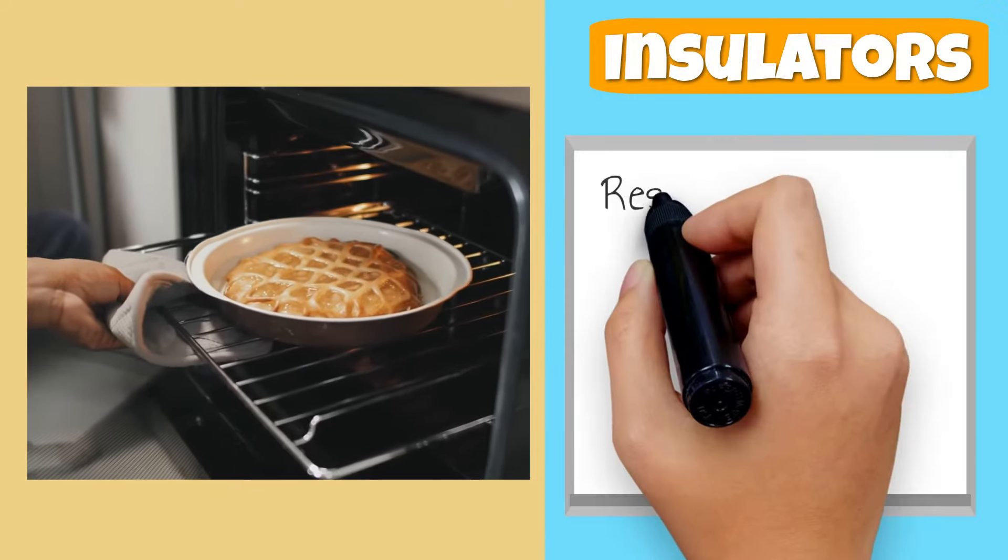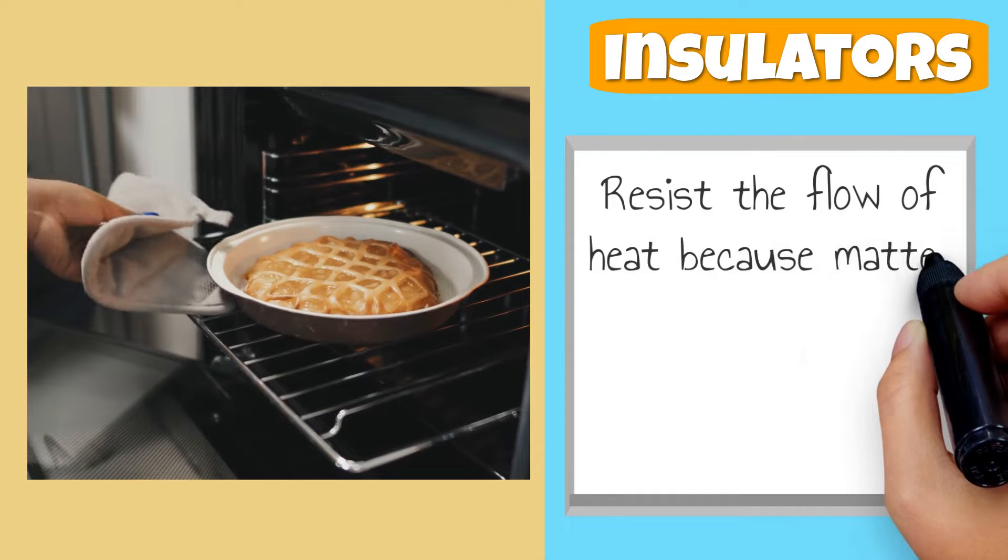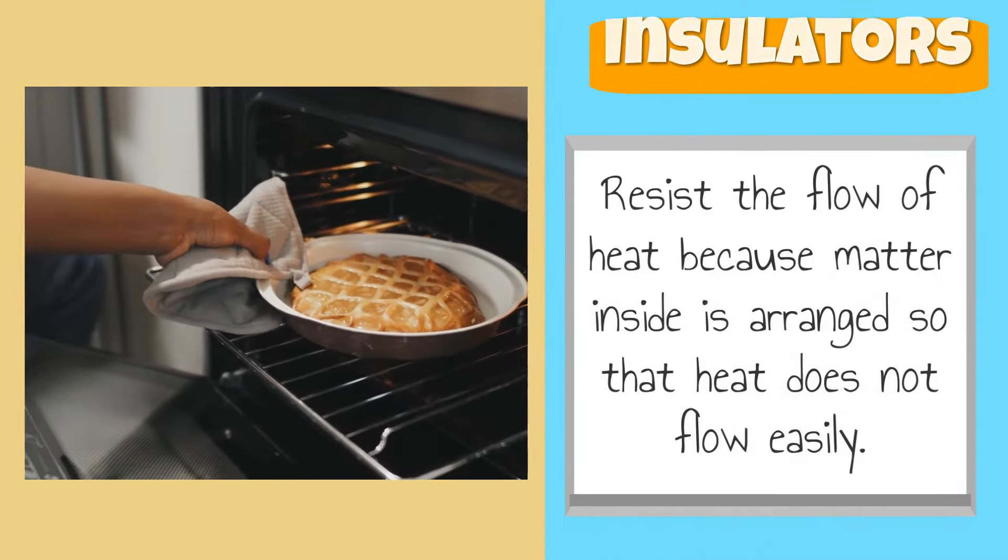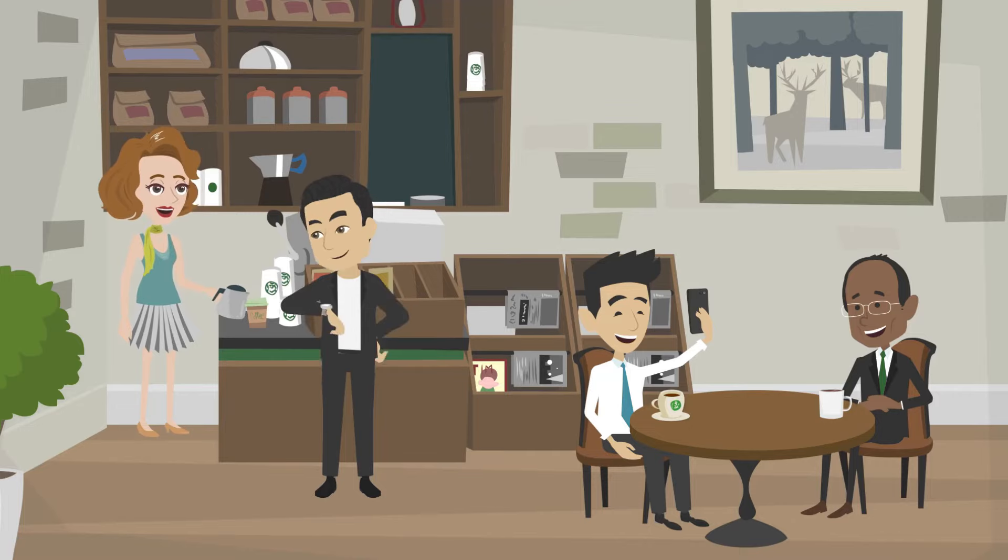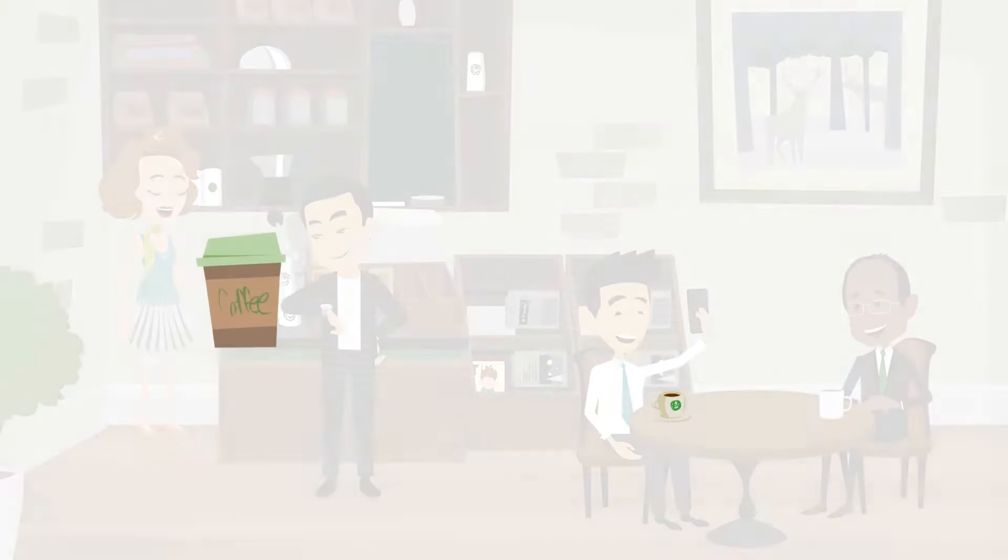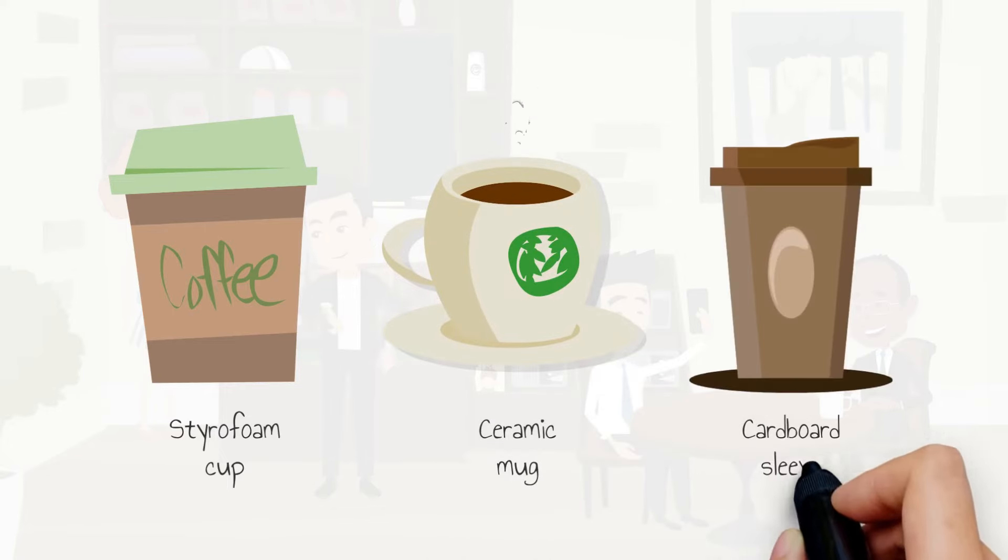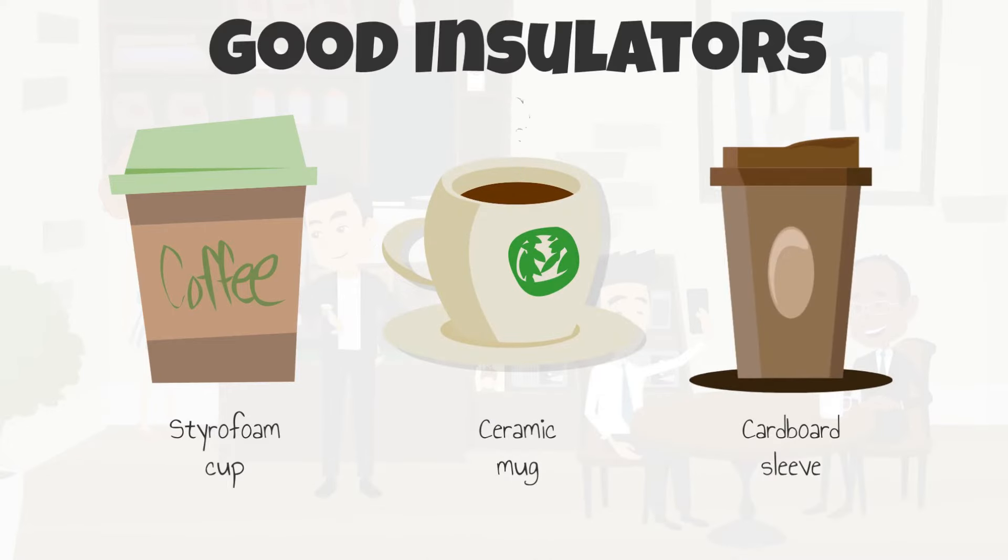Insulators also resist the flow of heat because matter inside is arranged so that heat does not flow easily. When you go to order your favorite hot beverage, it will be handed to you in a styrofoam cup, ceramic mug, or a cardboard sleeve because they are all great insulators. They trap the heat from the coffee to prevent you from getting burned.